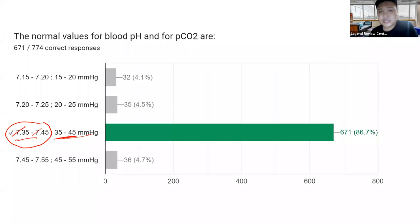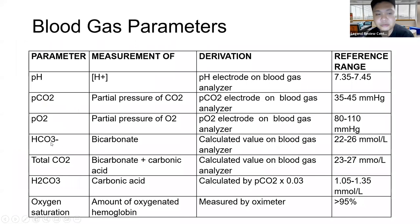In the past board exam, they started asking normal values for blood gas parameters. You have pH, PCO2, bicarbonate, total CO2, carbonic acid, and oxygen saturation. Please memorize the reference ranges from this table. Even if not asked directly, these values are important for interpretation of acid-base disorders.